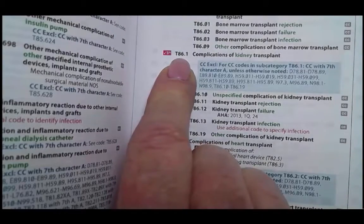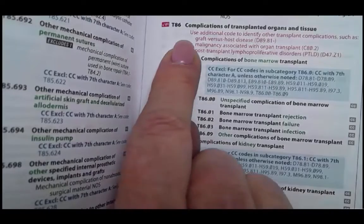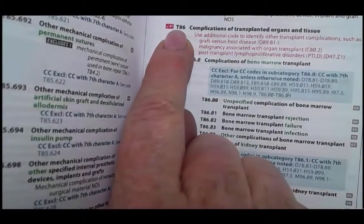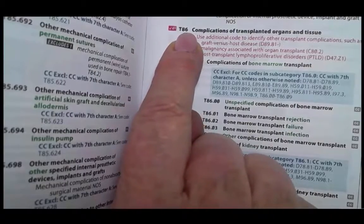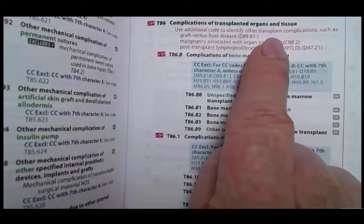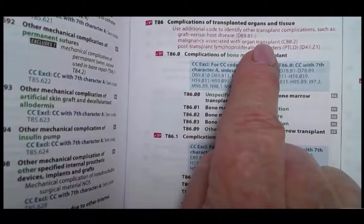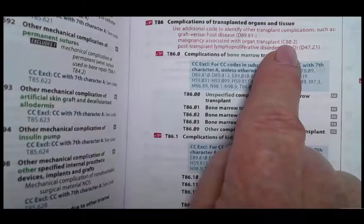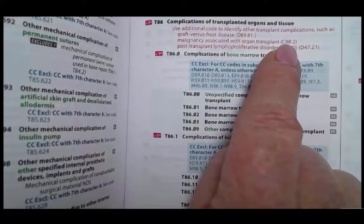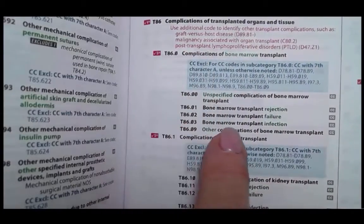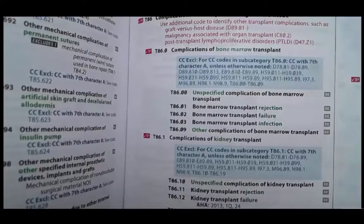One point I wanted to make was to look at the instructional notes with this category. This is why you often want to go not just straight to the code, but go back to the beginning of this section. This is called a category code when you have three characters — it's not complete. You've got a fourth character indicator telling you you need at least a minimum of four characters for this to be a complete code. But in this category, you're going to use additional codes to identify other complications such as graft versus host disease, or a malignancy associated with the organ transplant — which is our case — and use C80.2. So not only do our guidelines tell us to use C80.2, but this instructional note also tells us to use C80.2. You're always going to be reading above whatever code you're looking at — reading above to the category to see if there are any instructional notes that apply to your case, in addition to looking at your guidelines.